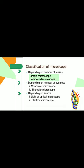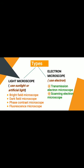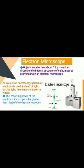The first classification is depending on number of lenses: simple microscope and compound microscope. Second, depending on number of eyepieces: monocular microscope and binocular microscope. Third, depending on source — light microscope or electron microscope. Light microscope uses sunlight or artificial light, and is further classified into bright field, dark field, phase contrast, and fluorescence microscope. Electron microscope uses electrons and is categorized into transmission electron microscope and scanning electron microscope.